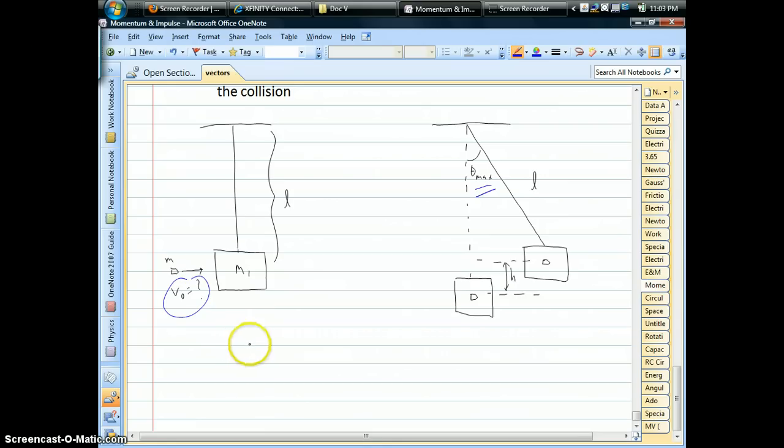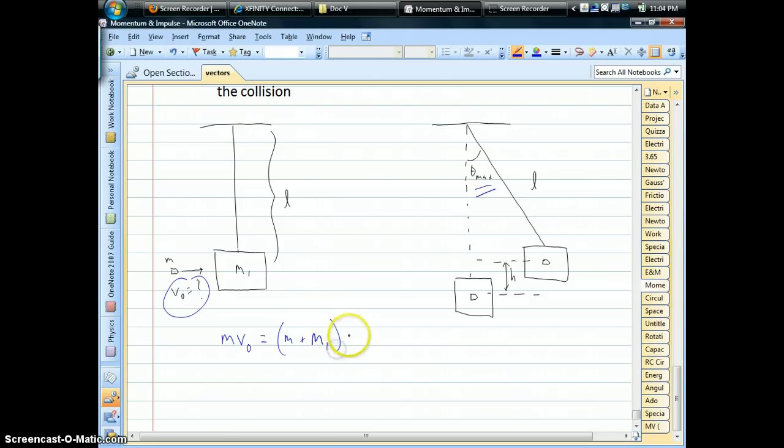And what that would look like is, the initial momentum is the mass of the bullet times its initial speed. Now afterwards, because it's inelastic and the things stick together, we'll have the mass of the bullet plus the mass of the block. But in order for this to work, we would have to know what the final speed is right after the collision.